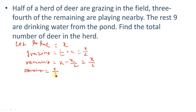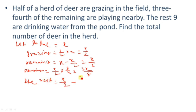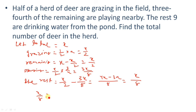Three-fourths of the remaining are playing: three-fourths of x by 2 equals 3x by 8. Now, the remaining minus playing equals the rest: x by 2 minus 3x by 8 equals 4x by 8 minus 3x by 8, which is x by 8. As per the question, the rest are 9, so x by 8 equals 9, which gives x equals 9 times 8 equals 72.